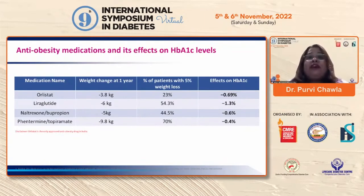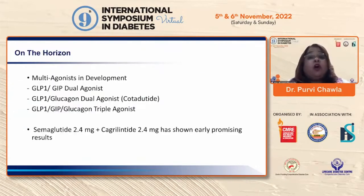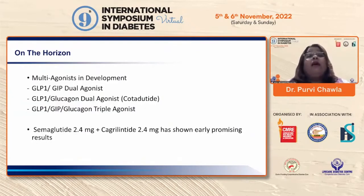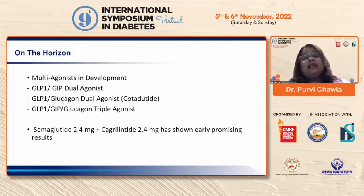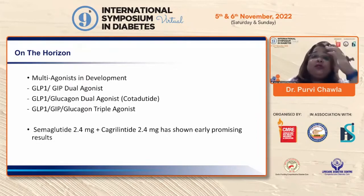The effects on HbA1c are in tandem with weight loss seen at year one, and more than 50 percent are achieving more than five percent weight loss. On the horizon, multi-agonists are in development: GLP/GIP dual agonists, GLP/glucagon dual agonists, GLP/GIP/glucagon triple agonists. Semaglutide 2.4 mg and cagrilintide 2.4 mg are also showing very promising results.